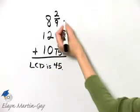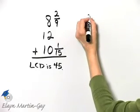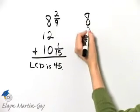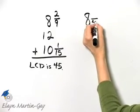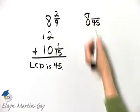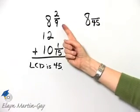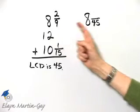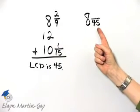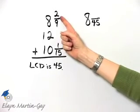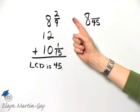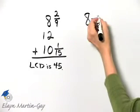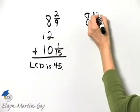So I'll rewrite each of these. That is 8, and I want a denominator of 45. Let's see if we can do this in our head. 9 times 5 is 45, so 2 times 5, I've got to multiply by the same number, 2 times 5 is 10.